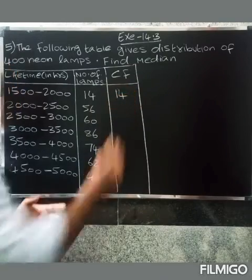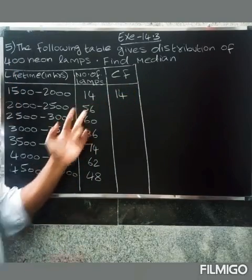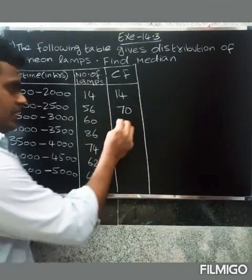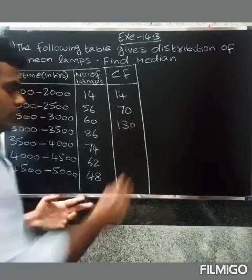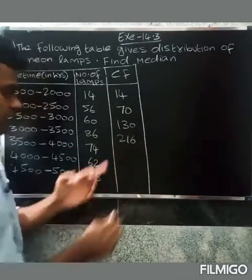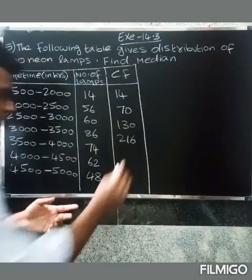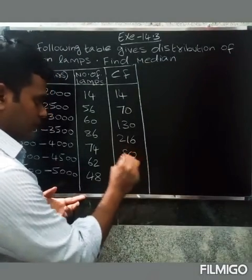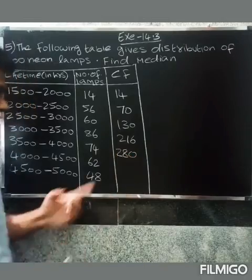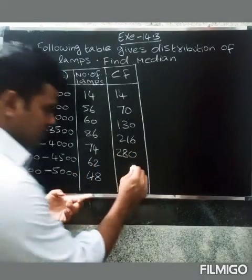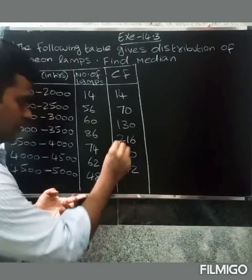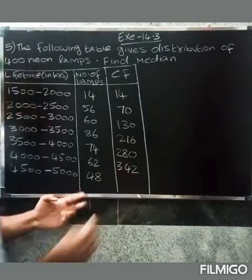So first 14. So next 14 plus 56, 70. So 70 plus 60, 130. So 130 plus 86, 216. So 216 plus 74. So 280. So 280 plus 62, 342.